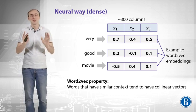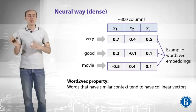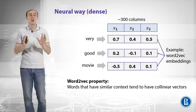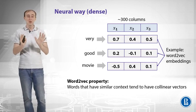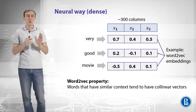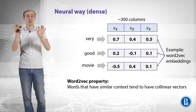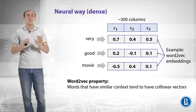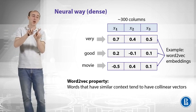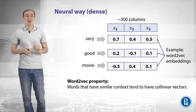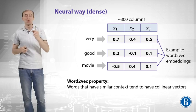We will dive into word2vec details in the next weeks, but all we need to know right now is that word2vec vectors have a nice property: words that have similar context in terms of neighboring words tend to have vectors that are collinear — pointing roughly in the same direction. That is a very useful property.